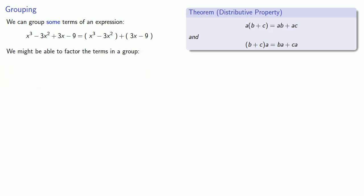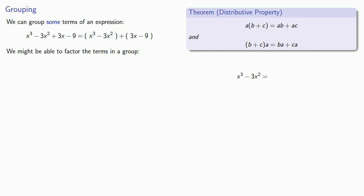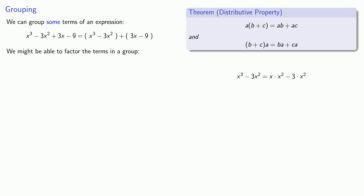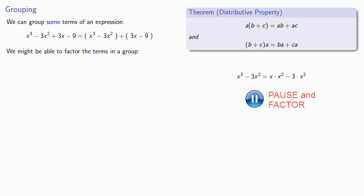Let's take a look at these two terms: x to the third minus 3x squared. We note that x to the third is x times x squared, while 3x squared is 3 times x squared. That means x squared is a common factor, so we can remove that common factor. Since multiplication is commutative and it's traditional to put simpler factors first, we'll rewrite that as x squared times x minus 3.